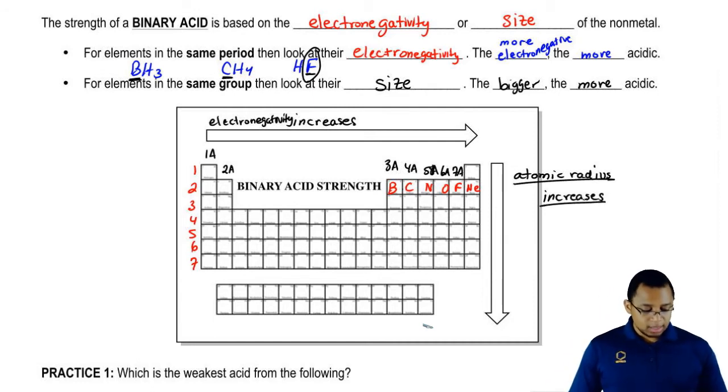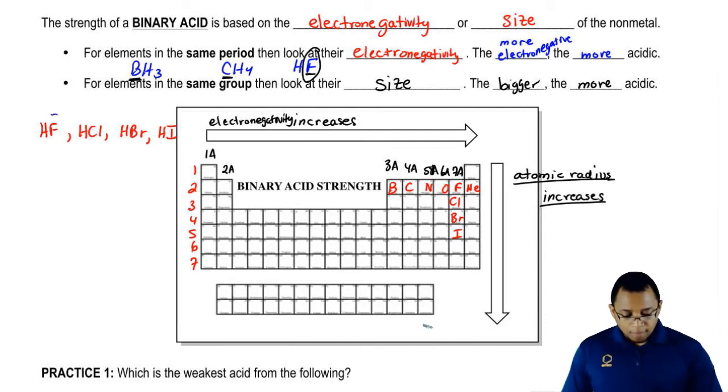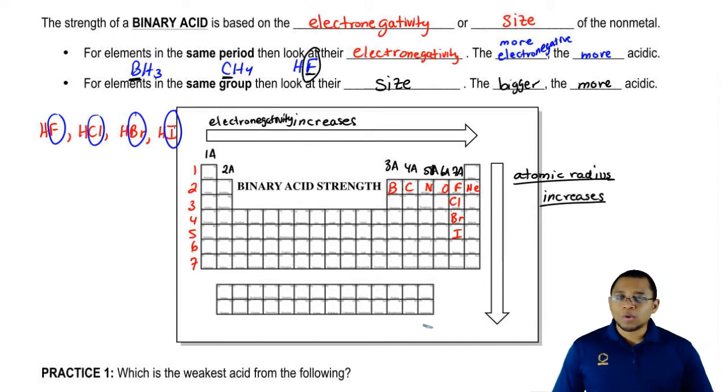So we're going to say, let's say we're looking at different types of acids. Here we have Cl, Br, and I. So let's say we wanted to compare HF, HCl, HBr, HI. We're going to say that all four of these nonmetals are all in the same group. They're all in group 7A.